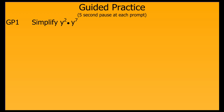Now for our guided practice section. We're going to work through some problems together. At each step I'm going to prompt you with the question you should be asking yourself, then I'll pause for about five seconds for you to think about it, then I'll show you. For this problem, our first question is: what are we trying to do here? We're trying to simplify this expression involving exponents. Using our product of powers property, we keep the base the same and add the exponents, giving us the simplified form of y to the ninth power.